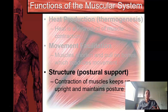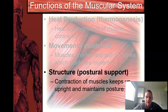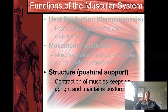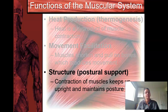The third function is structural and postural support. The contraction of muscles keeps us upright and maintains our posture. If you hunch over while walking or sitting so often, your muscles will stay that way and get used to it, leading to bad posture, which can then lead to other problems — especially skeletal problems.